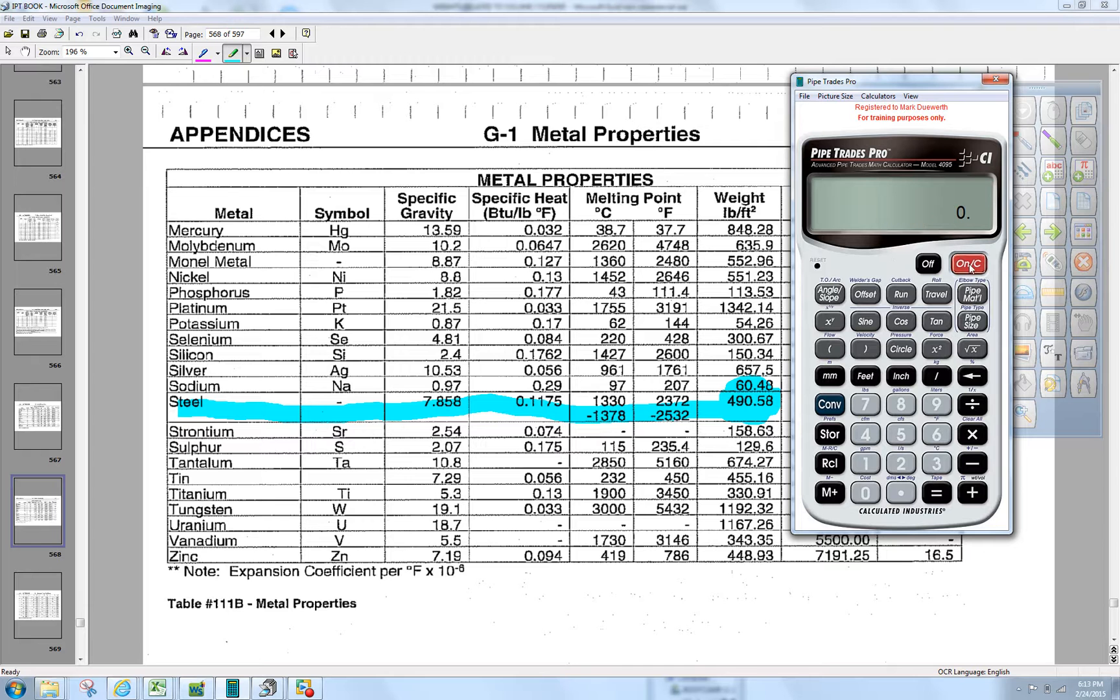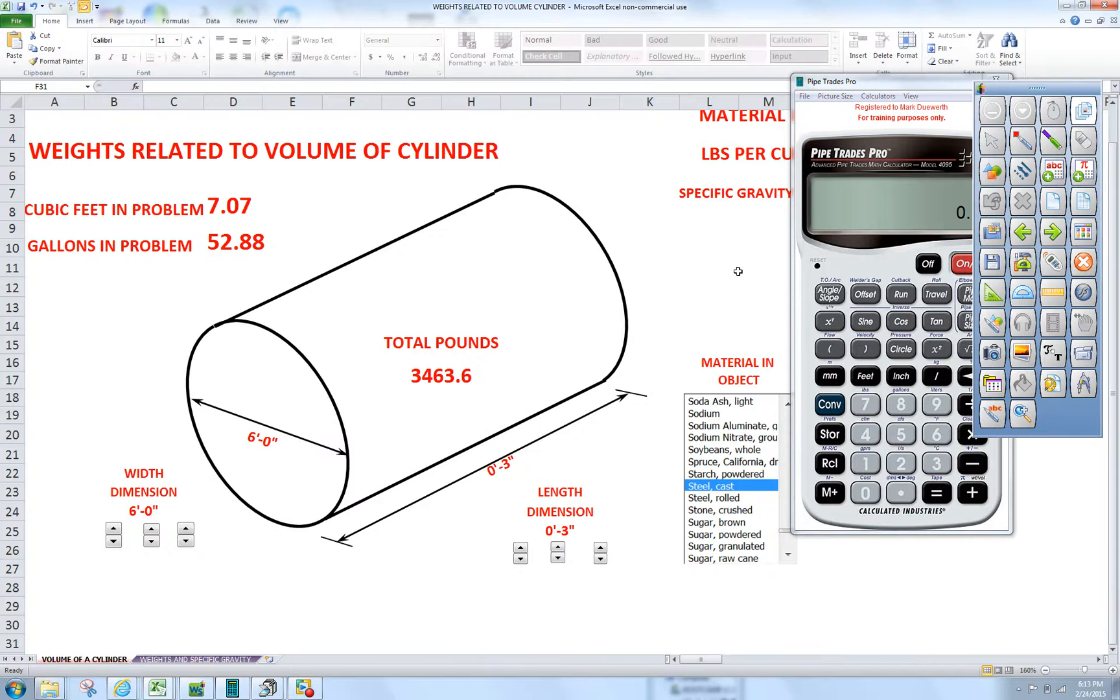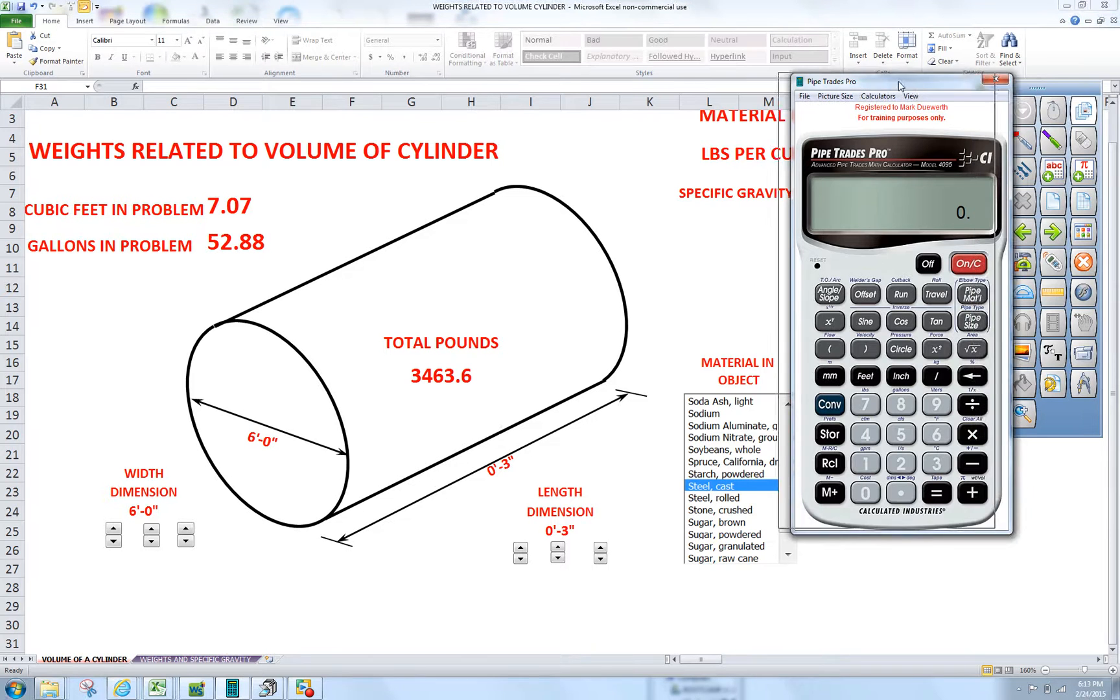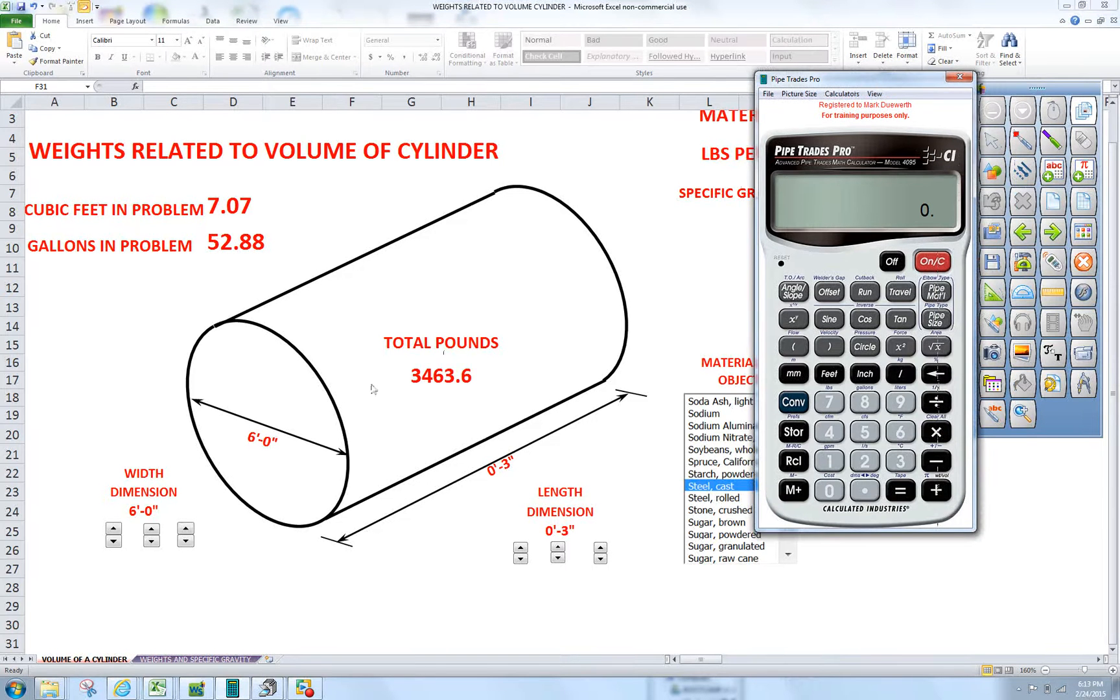We press clear, and do not press convert clear again. With this problem here, you can see this is a circle, so we use the circle key. Here we go six foot. We press circle key once. It confirms the diameter.